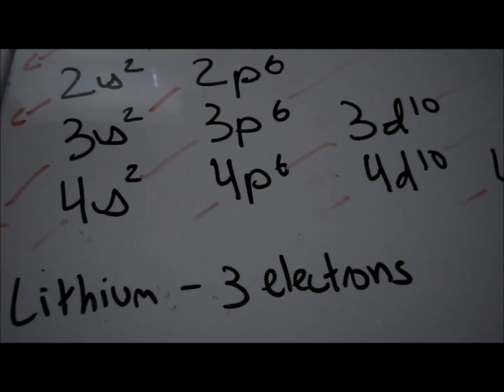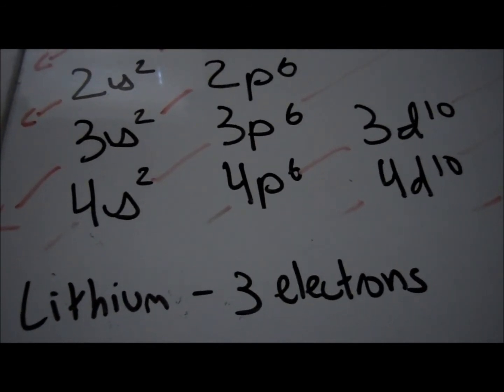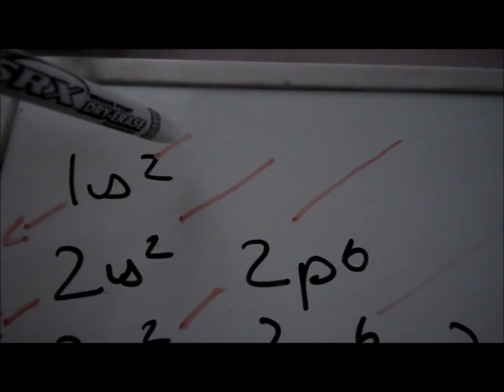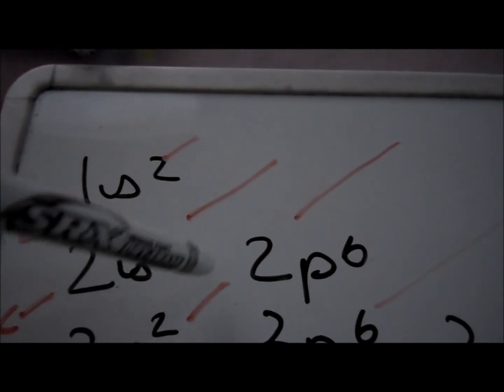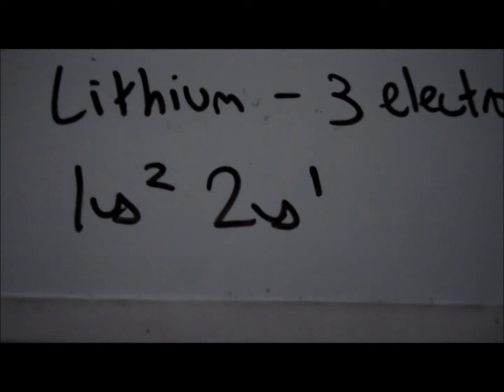Say you wanted the electron configuration of the element lithium. It has three electrons, so following the rule, you'd write 1s2, 2s1. The total number of electrons represented is three.